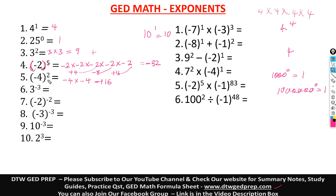Always check the sign rule: just multiply the numbers and then determine the sign. When the power is an odd number, put a negative on the answer. If you prefer, you can multiply it out the long way and still get the same result.